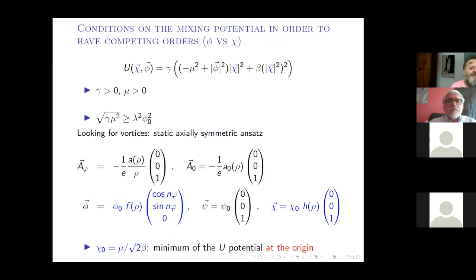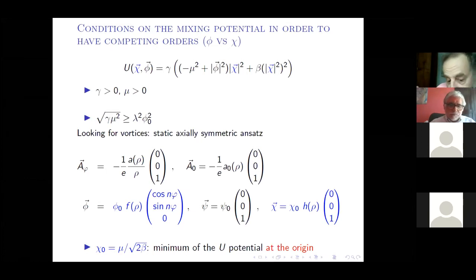But we start with the solution of the field equations of this theory that has no first order Bogomolny equation. So you have to solve second order field equations numerically because there is no exact solution. And you see here there is hidden the topology in this n. The other scalar in the gauge theory with symmetry breaking is just a constant which helps to break completely the symmetry, because if not you have no topological vortices. And then you have, for the competing order, the simplest thing is to put just a dependence in the radial variable. We are looking for axially symmetric static solutions.